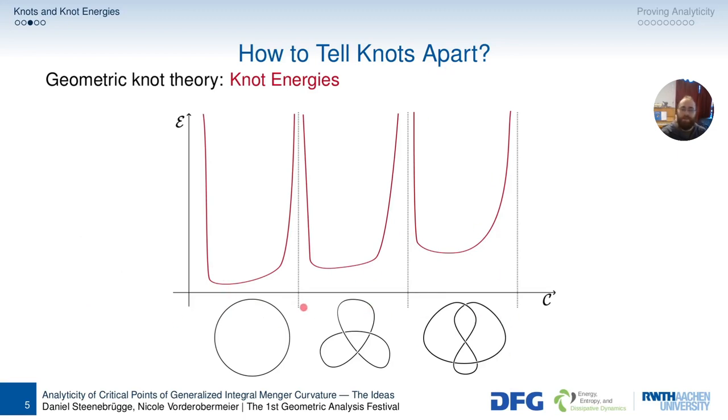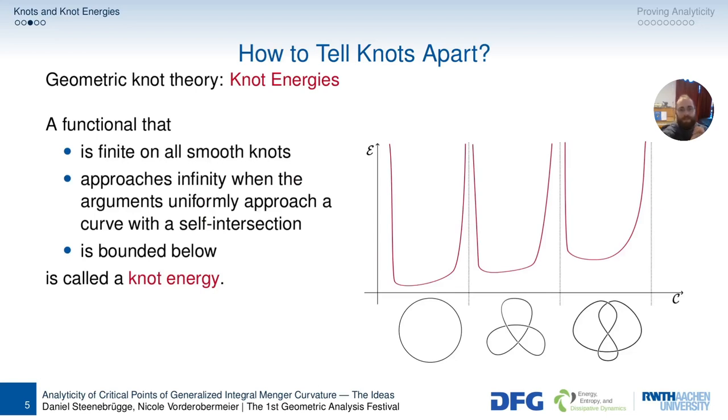And you see that within each knot class we have a minimizer, obviously. I mean, obviously the space of knots is one-dimensional. No, it's not. It's infinitely infinite-dimensional. We'll get to that a bit later. A knot energy is something that is more rigorously finite on all smooth knots, which approaches infinity when the arguments uniformly approach a curve with a self-intersection. That sounds terrible, but in the end it's just that we have one strand, we have another strand, and if they get to move towards each other, the energy gets bigger and bigger, and when they touch it gets to infinity.